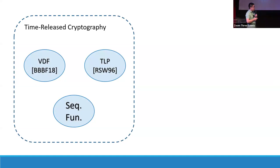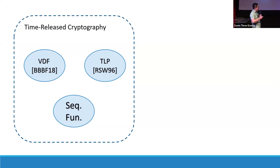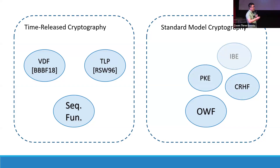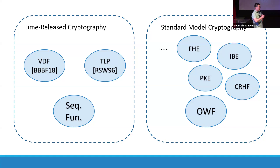Sequential functions form the backbone of what we know as time-release cryptography. Inside there, there are verifiable delay functions and time-lock puzzles, and they heavily rely on sequential assumptions. On the other hand, in the standard model, the one-way function is what we believe to be the most basic cryptographic assumption within standard model cryptography. Of course, on top of that, there are other stronger assumptions.